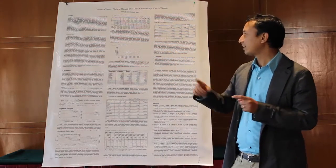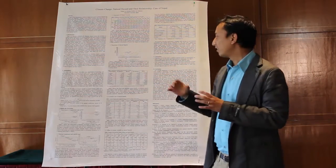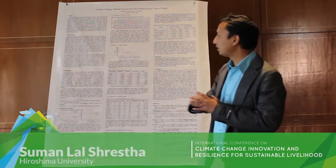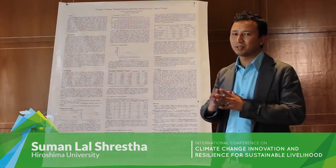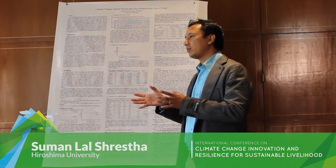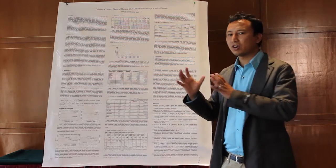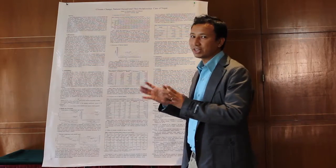After that, I tried to see the natural hazards occurrence. It's really increasing in number, but there is a limitation with the data of the natural hazards, because in Nepal, the data are not that much captured from the past. So there is a limitation, because all are reported cases which has caused casualties.